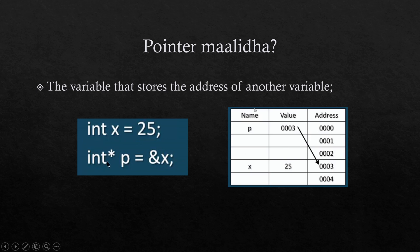So the pointer variable — to understand pointers — the pointer in the program stores the memory address, not the value itself. The address of x is the extra dimension; you go to x and retrieve the value from that memory address.